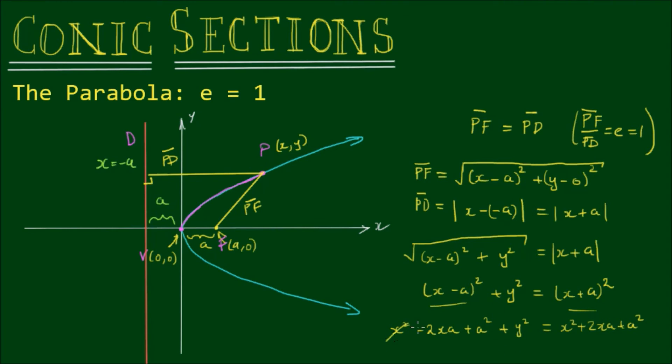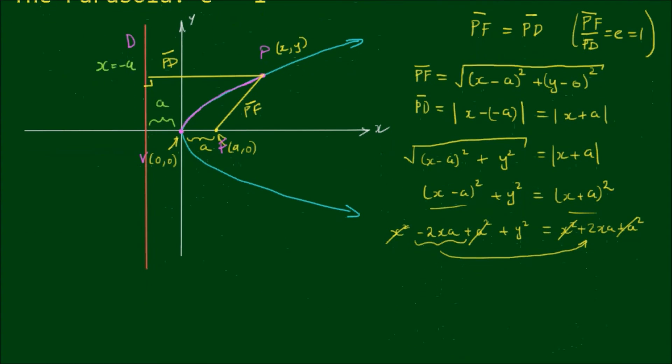Okay, so we have x² on both sides of the equation and they cancel. We have a² on both sides and they can cancel. We have a negative xa and a positive xa. So if I take this one to the other side, the equation becomes y² is equal to 2ax plus 2ax, and we have y² is equal to 4ax.